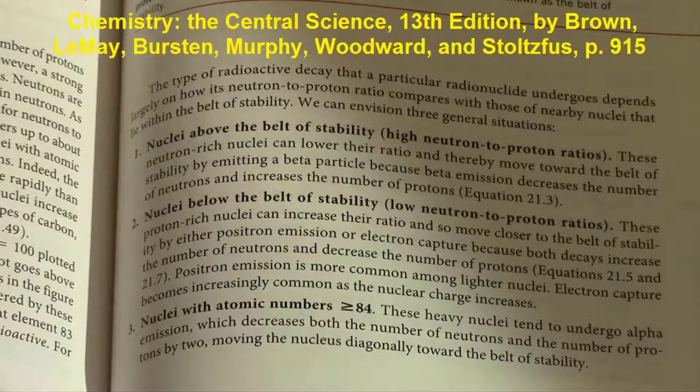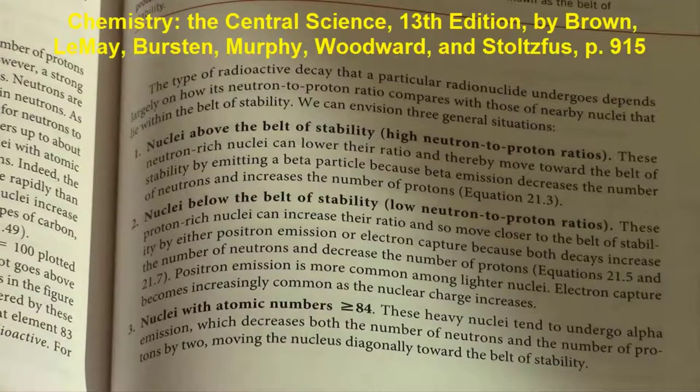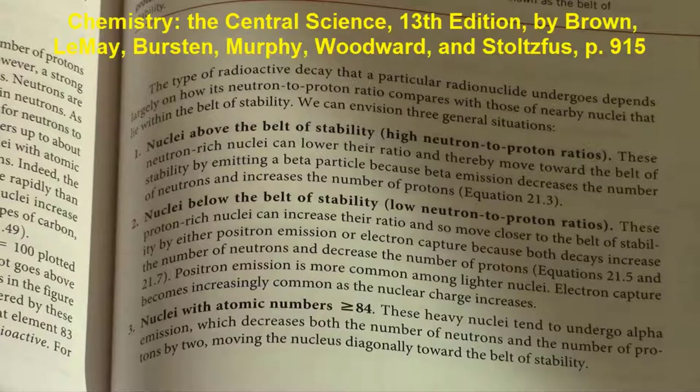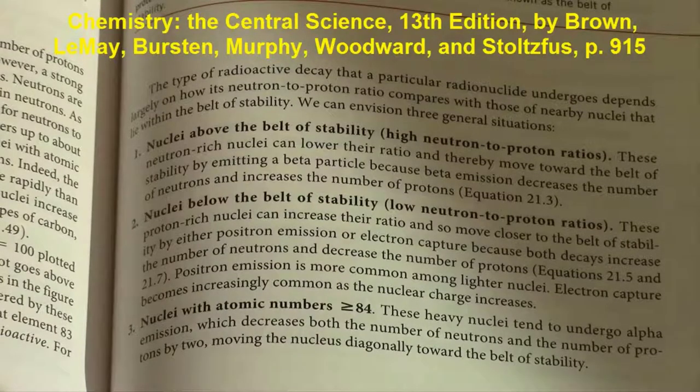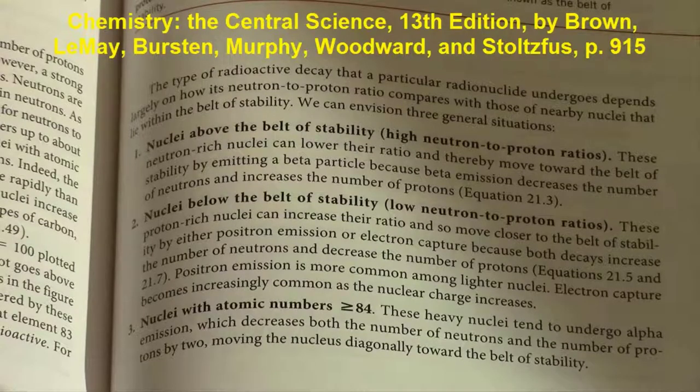Second, nuclei below the belt of stability which have a low neutron to proton ratio, these proton-rich nuclei can increase their ratio and move closer to the belt of stability by either positron emission or electron capture. Positron emission is more common among lighter nuclei.